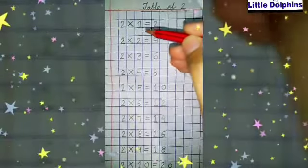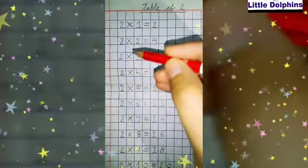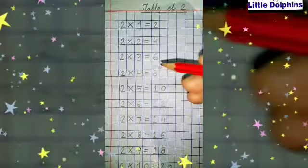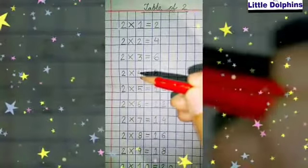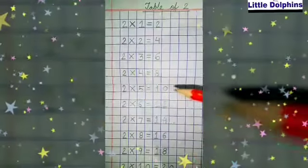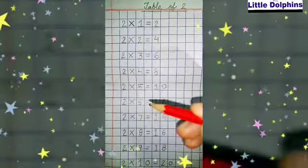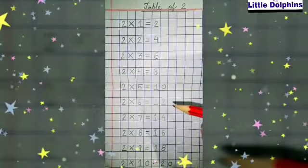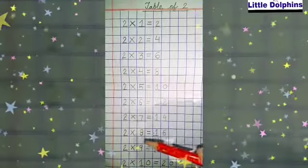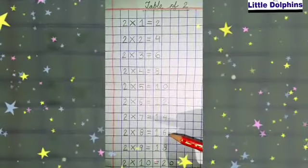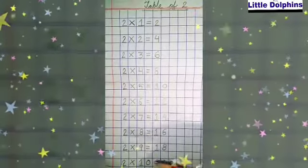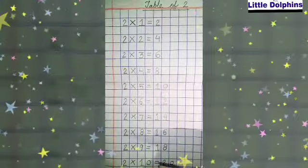Two 1s are 2. Two 2s are 4. Two 3s are 6. Two 4s are 8. Two 5s are 10. Two 6s are 12. Two 7s are 14. Two 8s are 16. Two 9s are 18. Two 10s are 20.